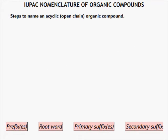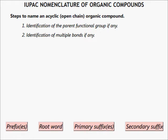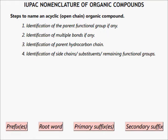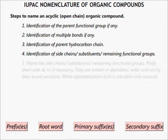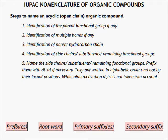Steps to name an acyclic organic compound. Number one: identification of the parent functional group, if any. Number two: identification of multiple bonds, if any. Number three: identification of parent hydrocarbon chain. Number four: identification of side chains, substituents, and remaining functional groups. Number five: name the side chains, substituents, and remaining functional groups; prefix them with di-, tri- if necessary.